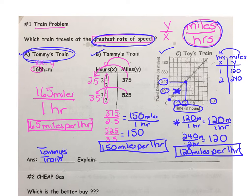Tommy's train travels at a speed of 165 miles per 1 hour, which is the greatest rate of speed. Divide the number of miles, which we did here, by the number of hours to get the unit rate. Finally, compare the unit rates for each train.